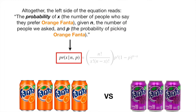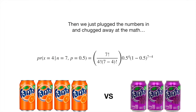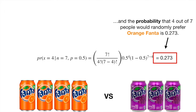All together, the left side of the equation reads: the probability of x, the number of people who say they prefer Orange Fanta, given n, the number of people we asked, and p, the probability of picking Orange Fanta. Then we just plugged the numbers in and the probability that 4 out of 7 people would randomly prefer Orange Fanta is 0.273.